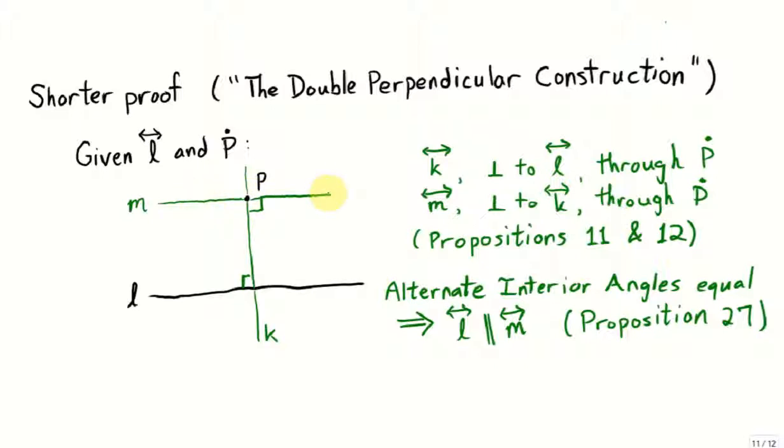They are propositions 11 and 12 from Euclid's Book 1. Now, it immediately follows that both these interior opposite angles or right angles are equal. Therefore, the line L is parallel to the line M, by Euclid's Proposition 27.